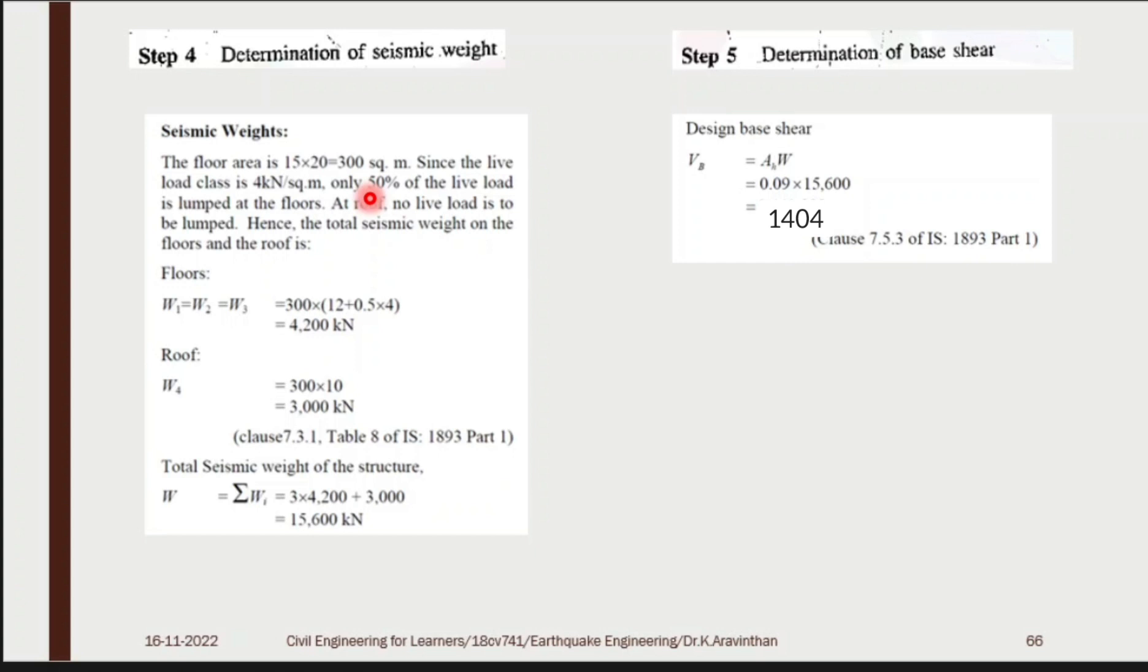In code book they have mentioned 50% of live load. If your live load is more than 3 kN/m², so what is your live load? 4 kN/m². If it is more than 3, you have to reduce 50%. The weight is found out like this: 0.5 into 4 plus 12. What is this 12? Dead load. So this is dead load and live load. If you combine, you will be getting total load. Combining this and multiplying by area, you will get weight on the three floors. What are they? W1, W2, W3. What is the fourth floor? That is roof. Roof doesn't have any live load. It only has the dead load. Dead load is 10. 300 into 10 is 3000.